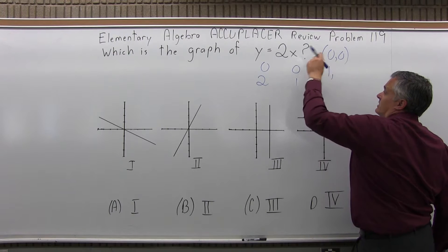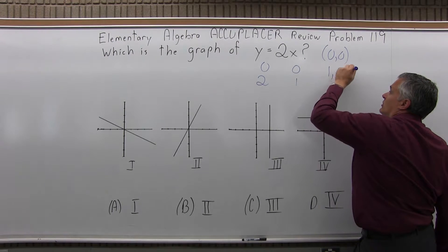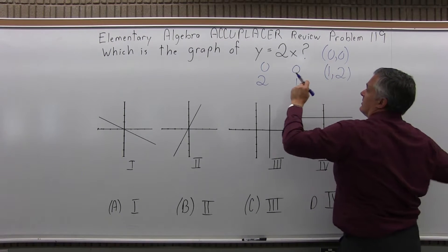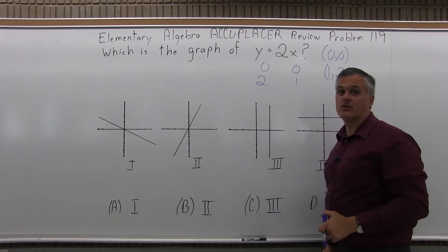So 1 for x, because the x-coordinate is given first, and then 2 for y. 1 for x, 2 for y, you get 2 equals 2, it makes the equation true.